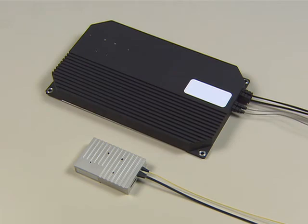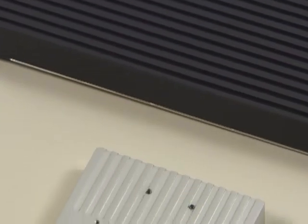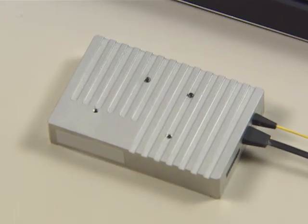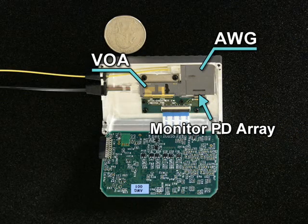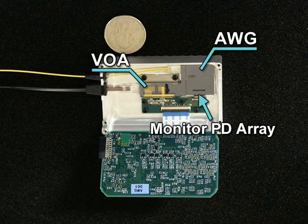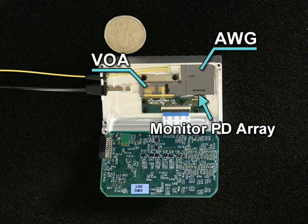This technology reduces the module size to a mere one-twentieth of its former size. By connecting chips that meet the full spectrum of required characteristics, this technology improves the yield rate of the VAWG module.